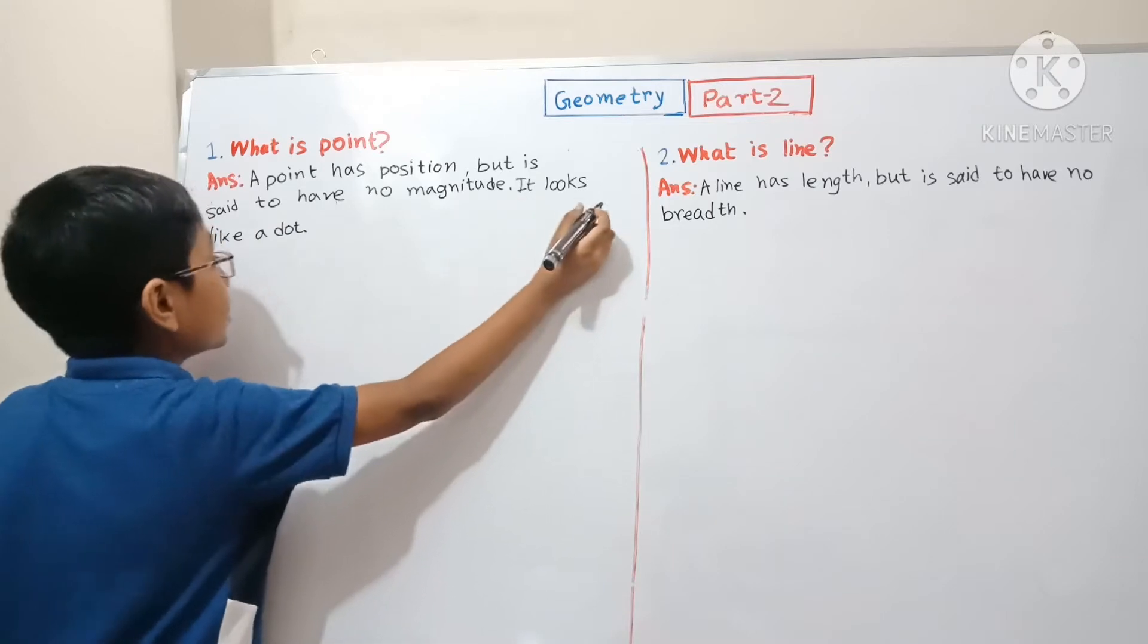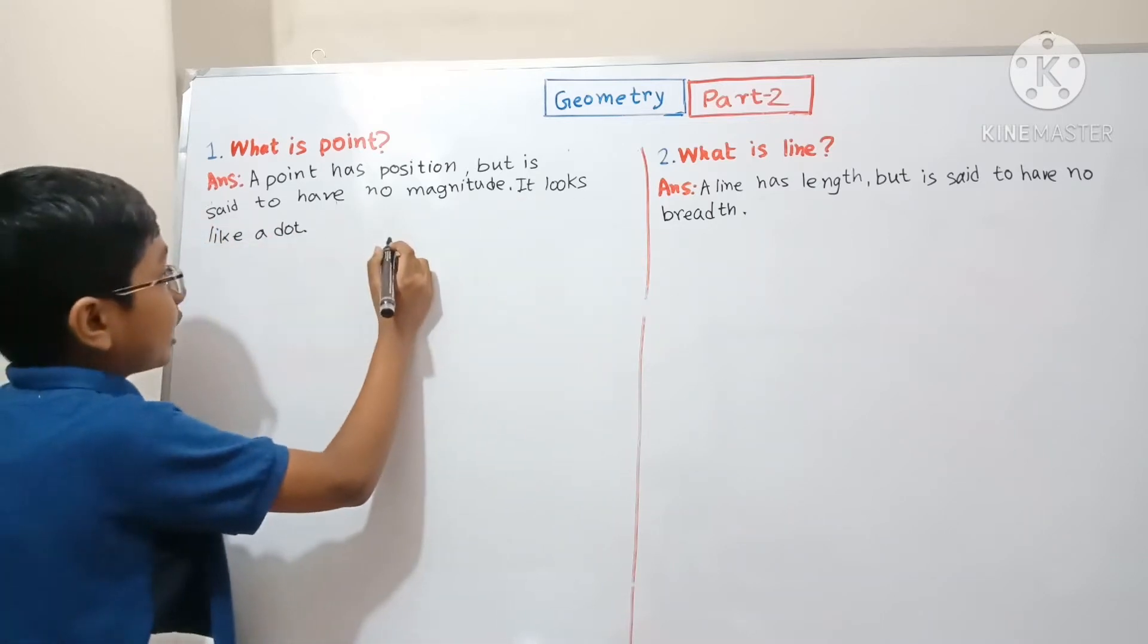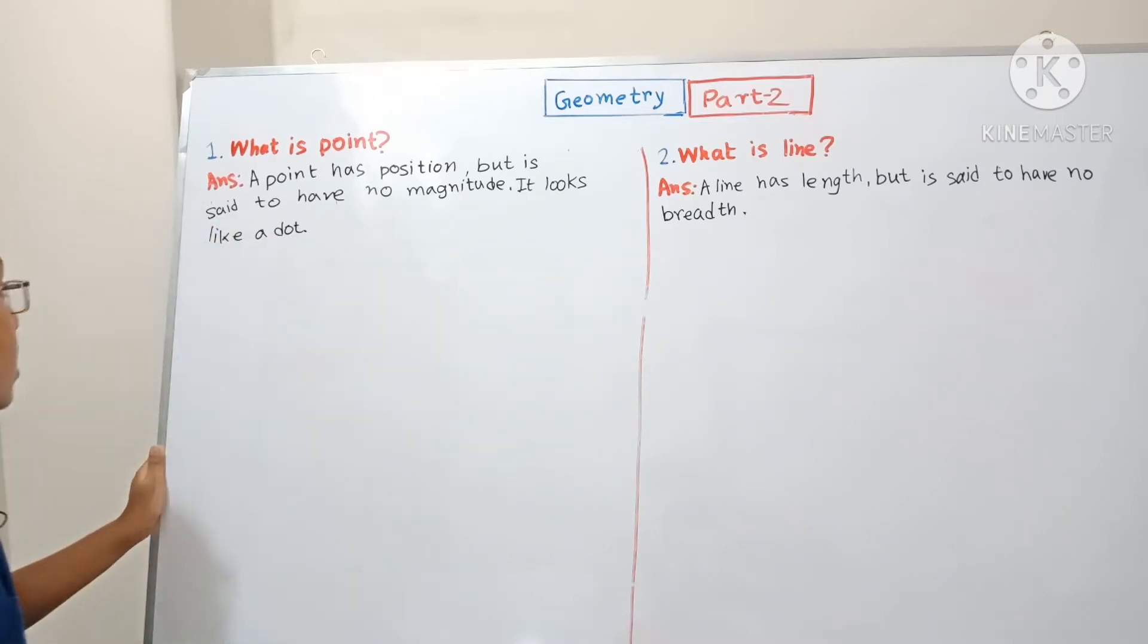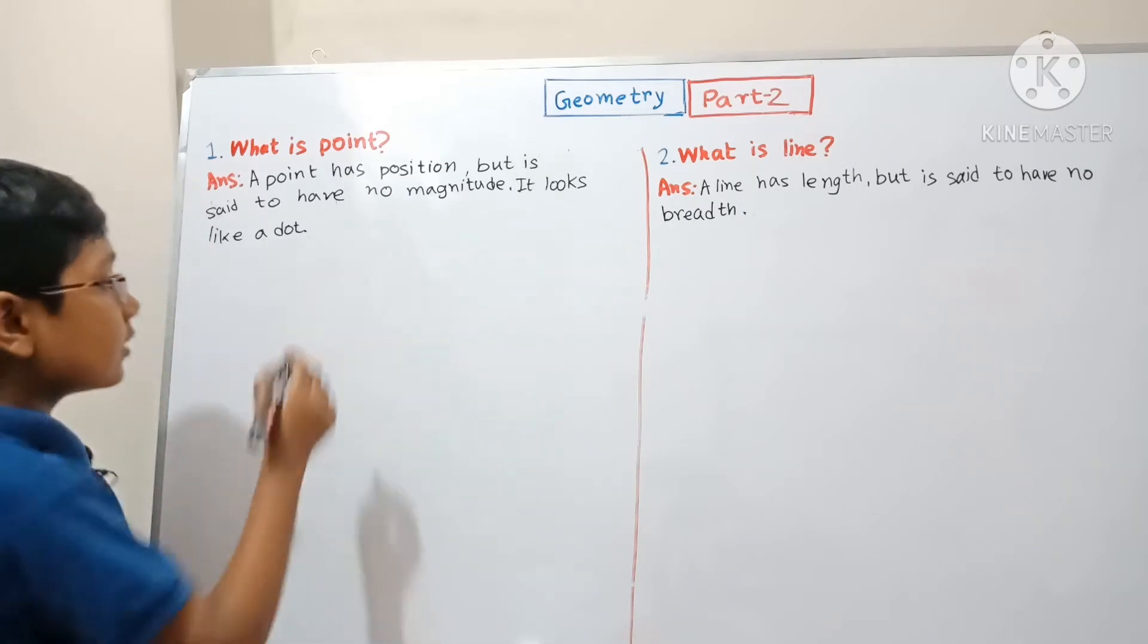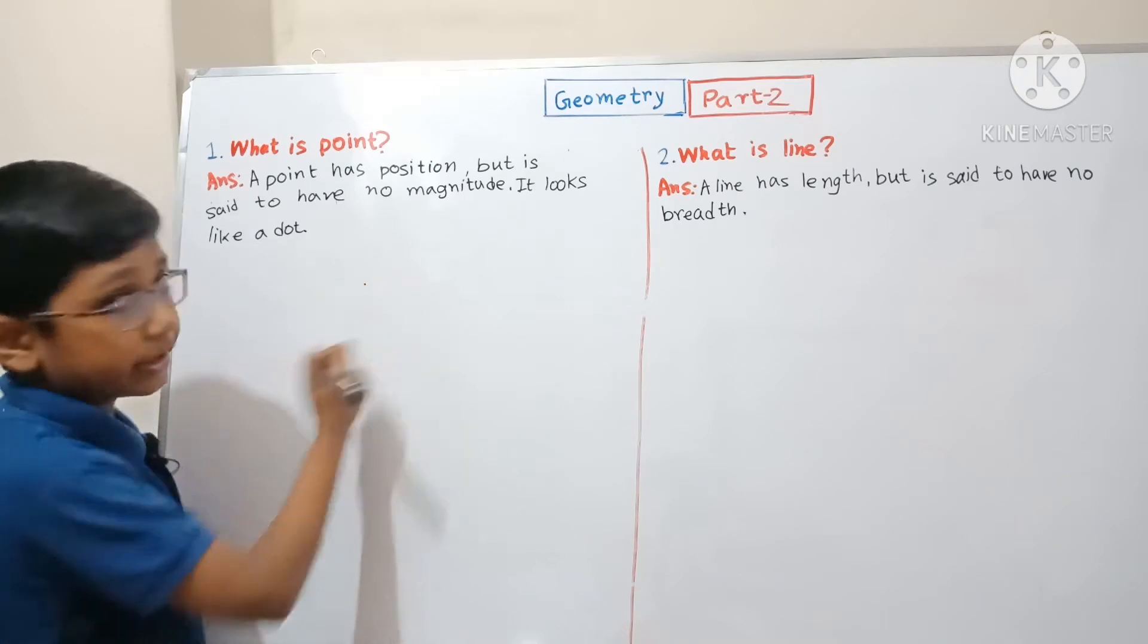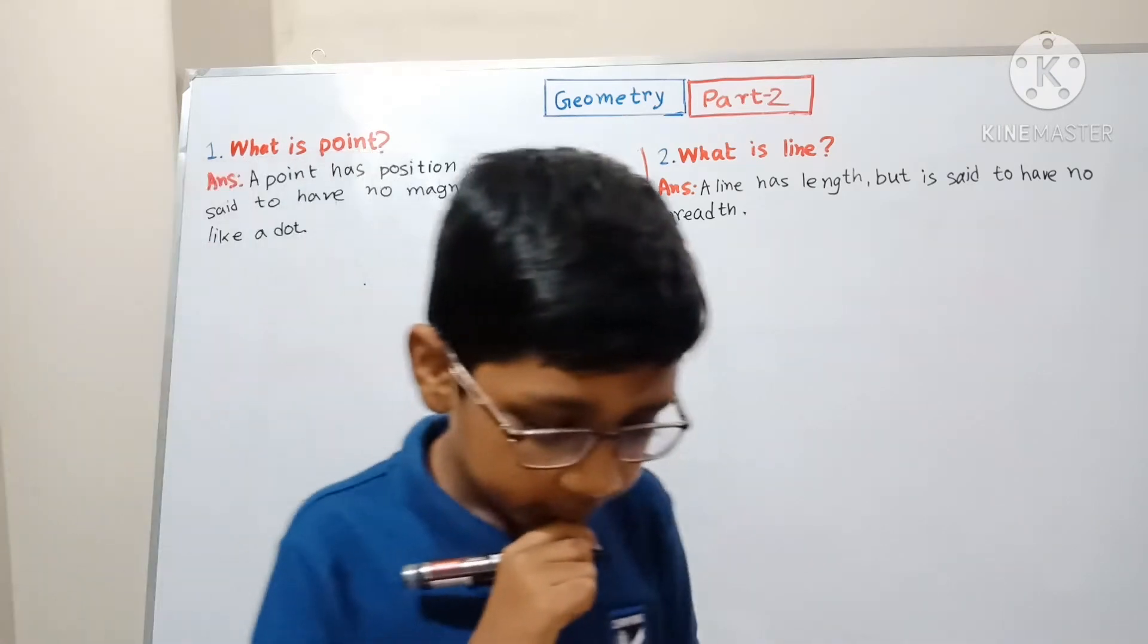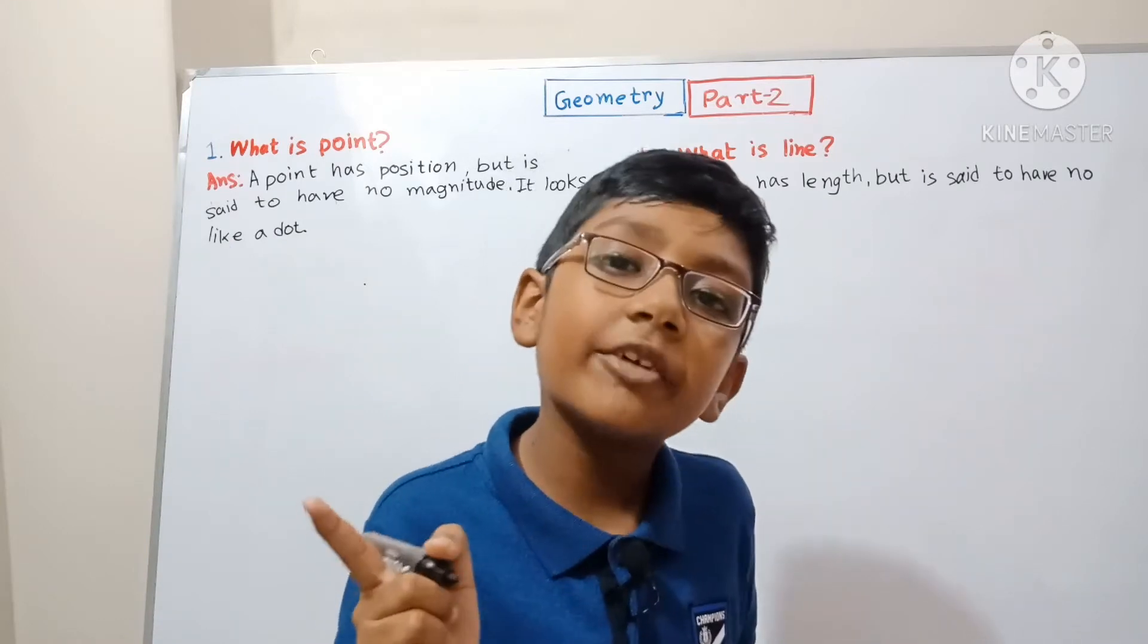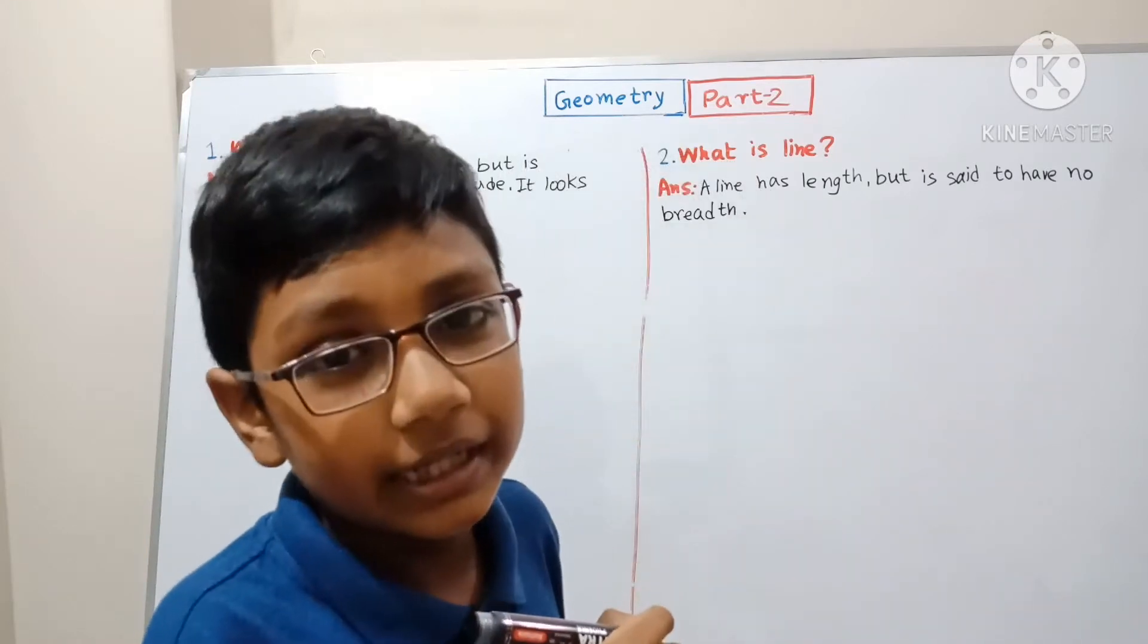So what is a point? A point has position but is said to have no magnitude. It looks like a dot. Let me draw a point for you and I should name it.